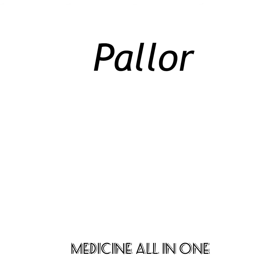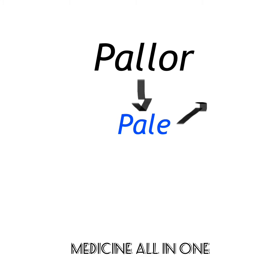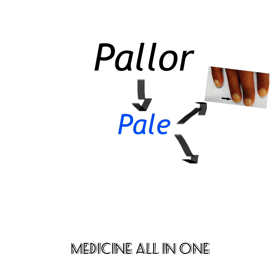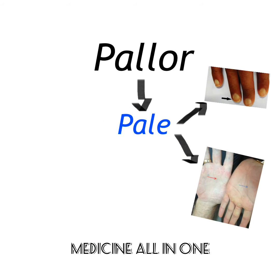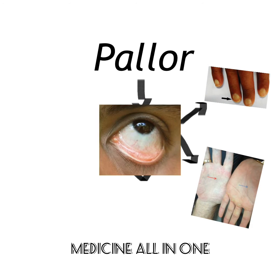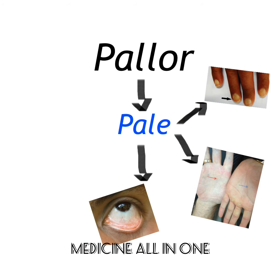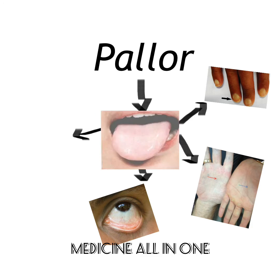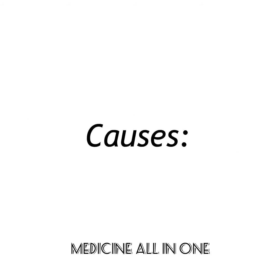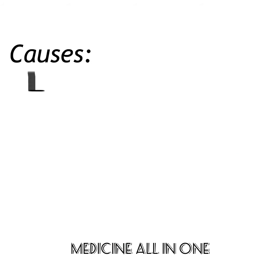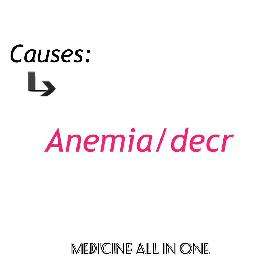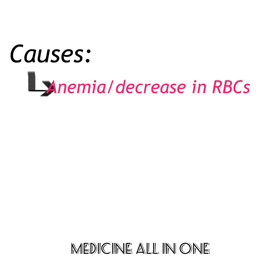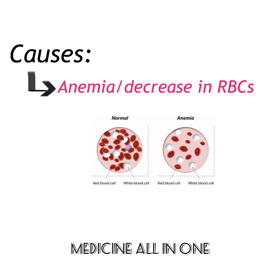In this video we will discuss about pallor. Pallor is the pale appearance of nails, palmar skin, lower conjunctiva, and dorsum of tongue. Pallor is due to anemia or decrease in red blood cells.